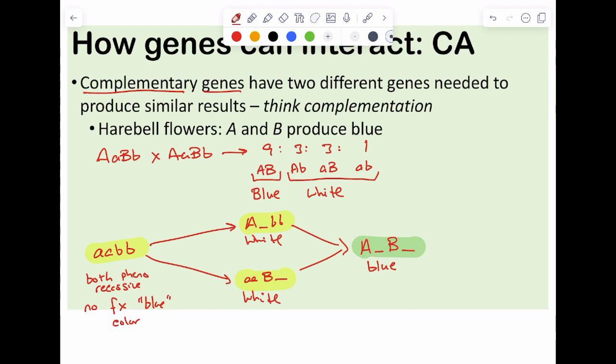Because I can't distinguish between the double recessive, one of the two genes being recessive, the other one not being, and the reciprocal, meaning make the other gene recessive. I can't tell any of those three apart. They all have the same phenotype. When that's the case, when we need all or both of the genes to have a dominant in order to see the full phenotype, this is what we call complementary action.